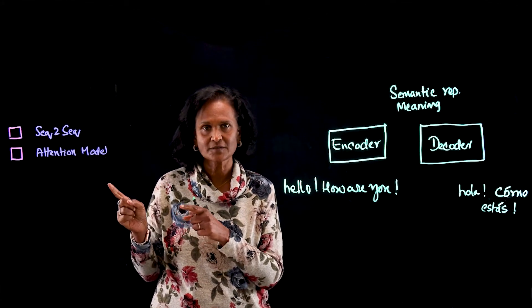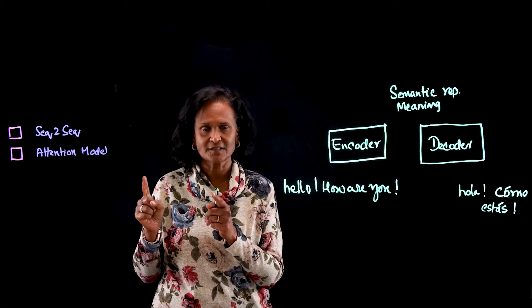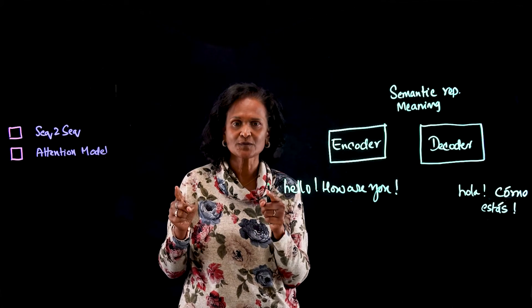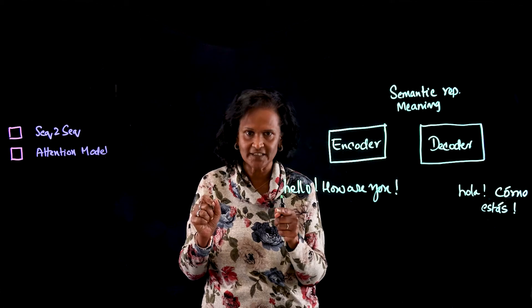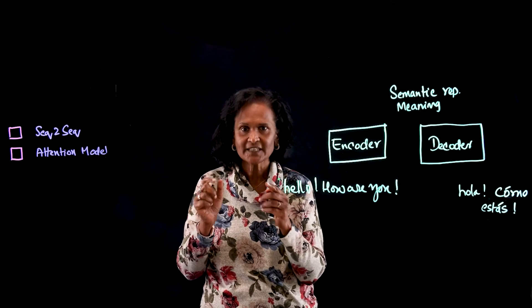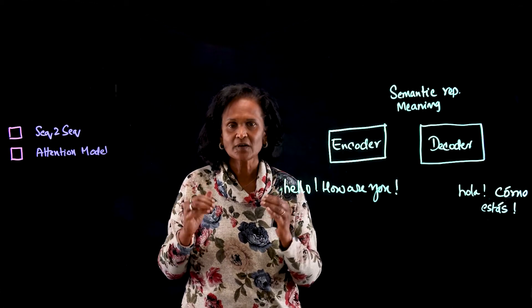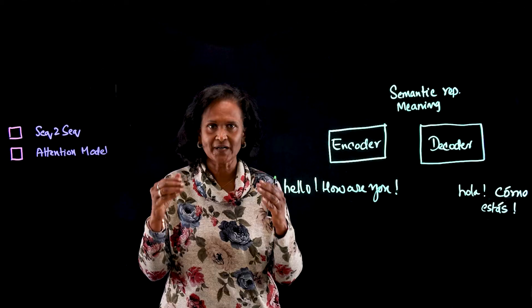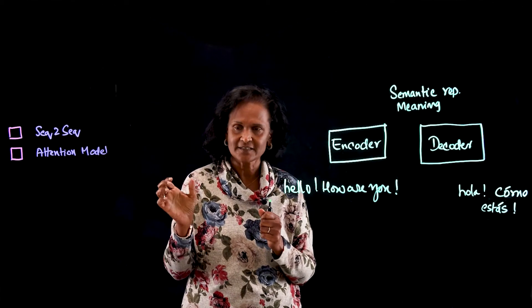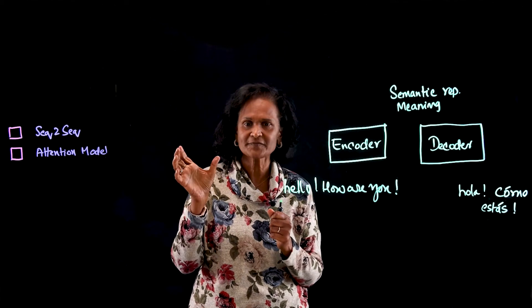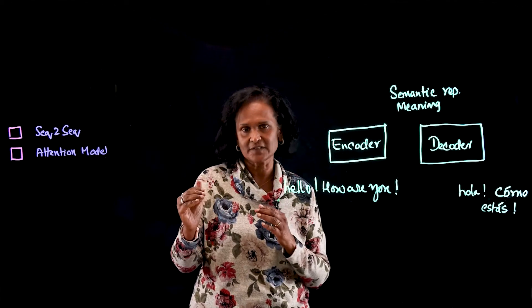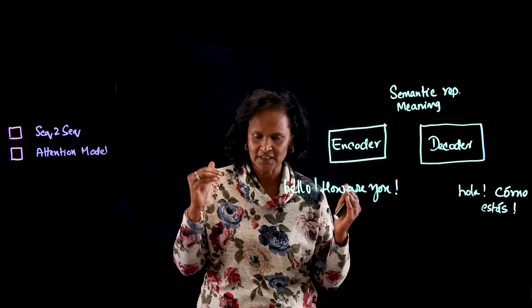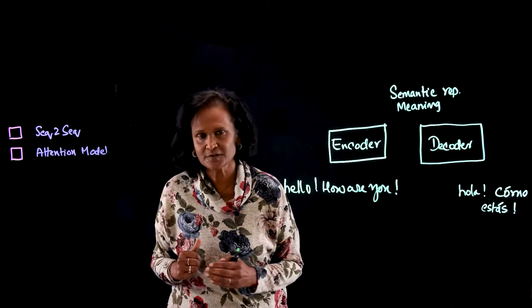Large language models do the translations differently. They make use of content that is already available in different languages — we call it large corpuses of parallel text. That is, examples of the same text in different languages like English, Spanish, Japanese, and so on. And we feed it to the models.